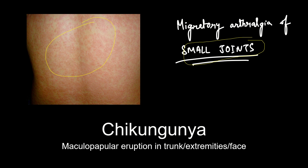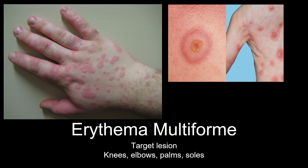Erythema multiforme has target lesions. Can you tell me which other disease has target lesions? Lyme disease, caused by Borrelia burgdorferi. Remember that in Borrelia infection you get Bell's palsy, myocarditis and arthritis in later stages — you won't get such symptoms in erythema multiforme.